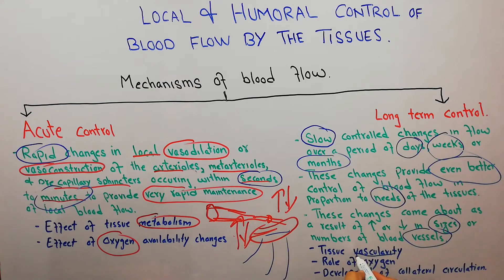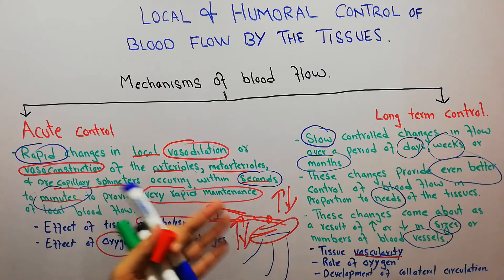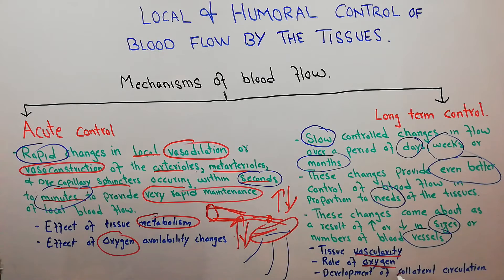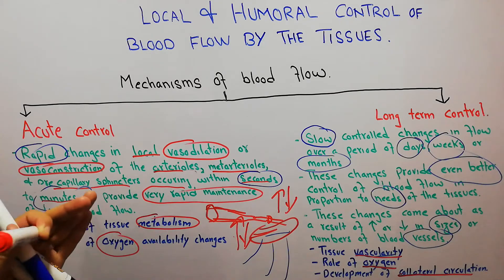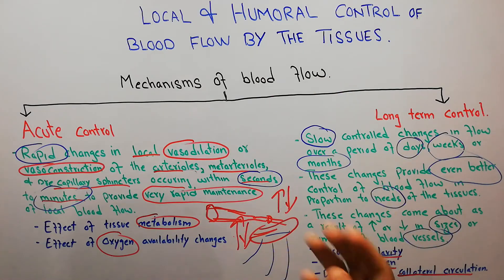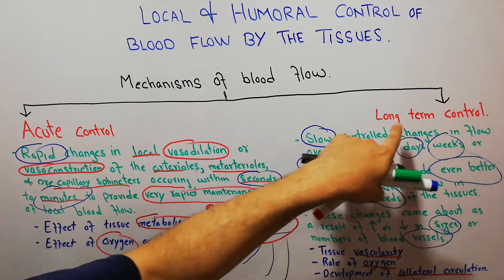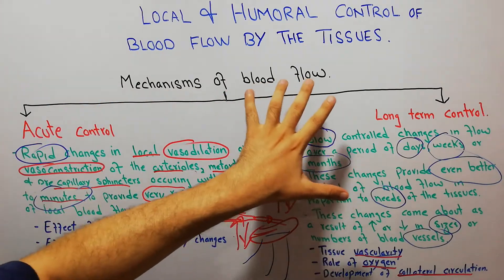Long-term control is influenced by tissue vascularity — vascular changes in response to demand for increased vessels — the high demand for oxygen in a tissue, and also by the development of collateral circulation. So metabolism and oxygen availability play an active role in acute control, while tissue vascularity, changes in the number of vessels, oxygen supply, and collateral circulation play a role in long-term control of blood flow.